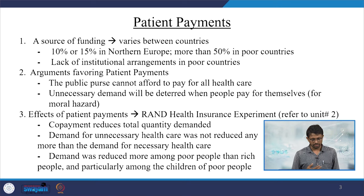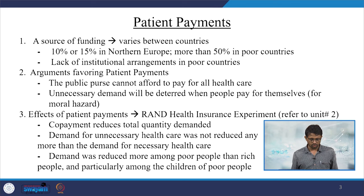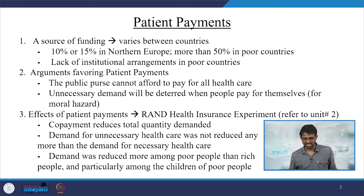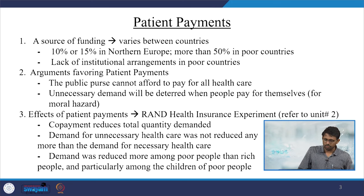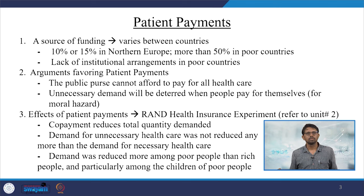There are different sources of funding in different countries — 10 to 15 percent are the funding sources in Northern Europe, and more than 50 percent in poor countries as far as patient payments are concerned. There is a lack of institutional arrangements in poor countries; hence the source of funding really matters, especially in less developing or underdeveloped countries.